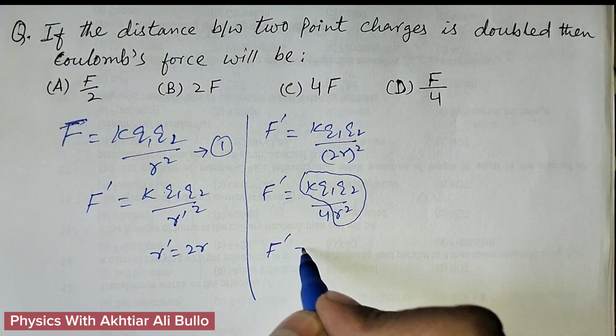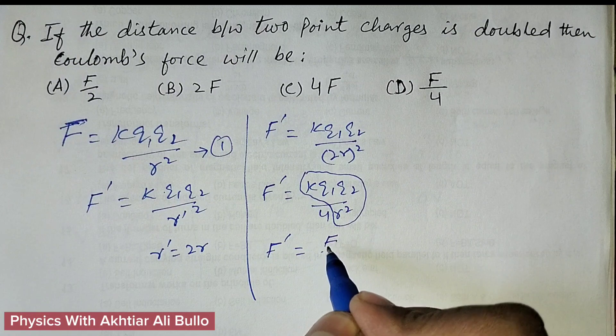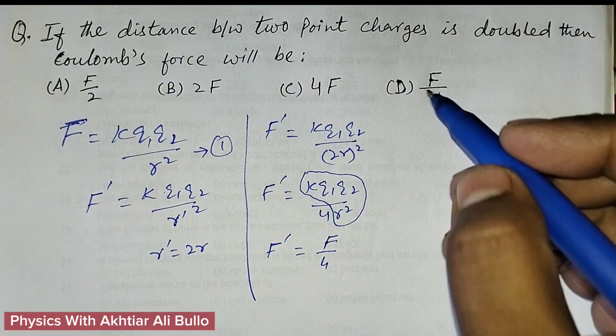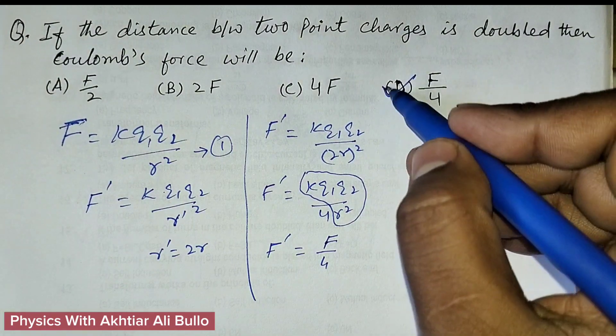So F dash will be equal to F upon 4. Therefore, the correct option will be D) F upon 4.